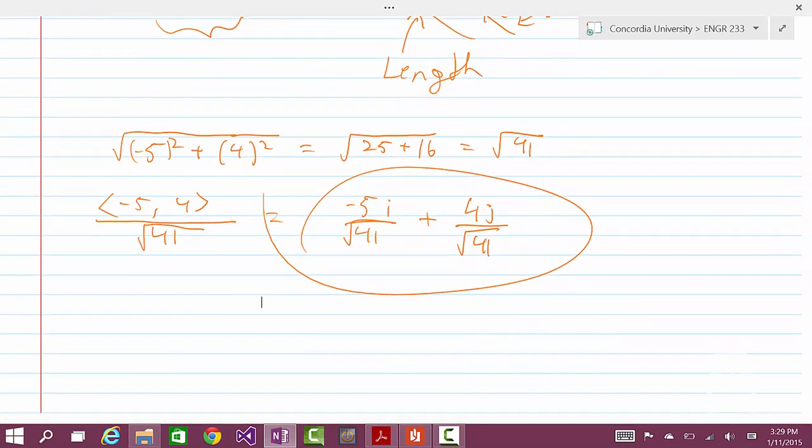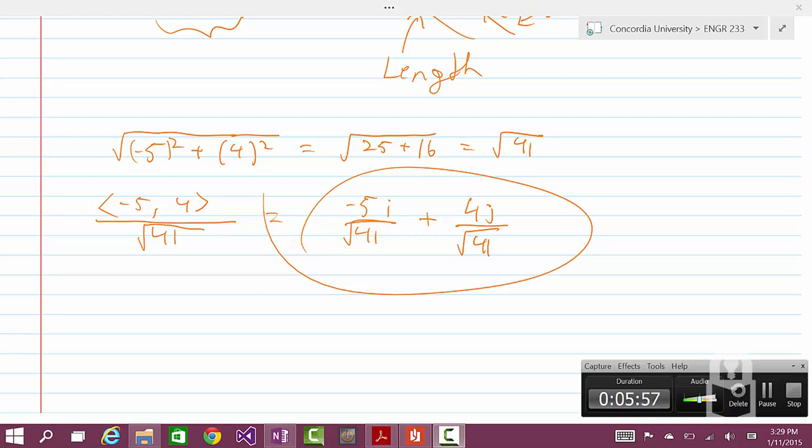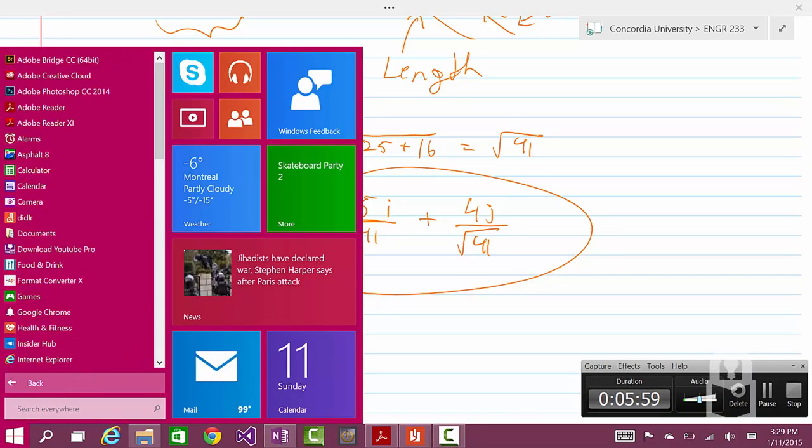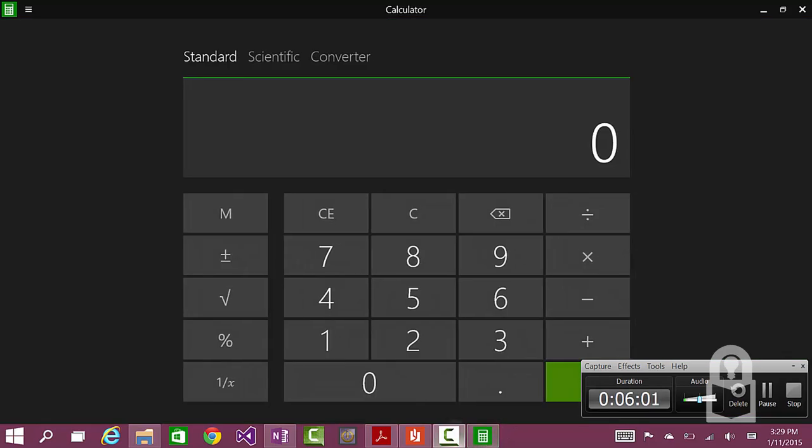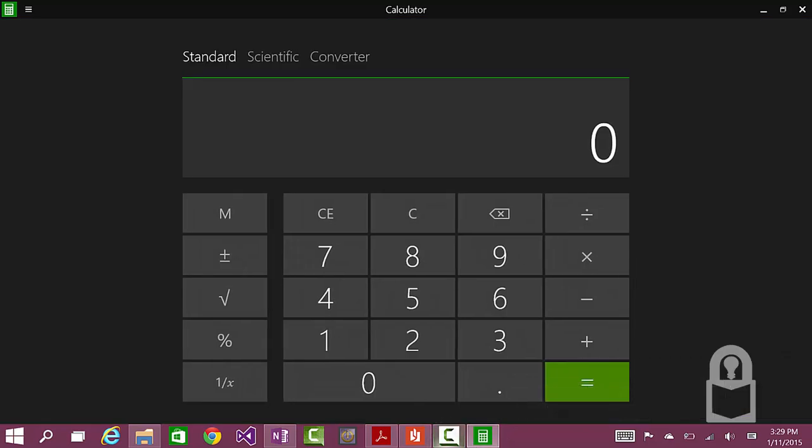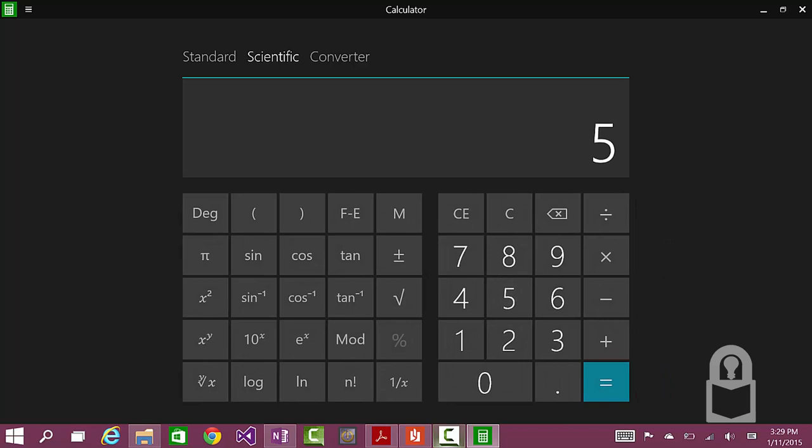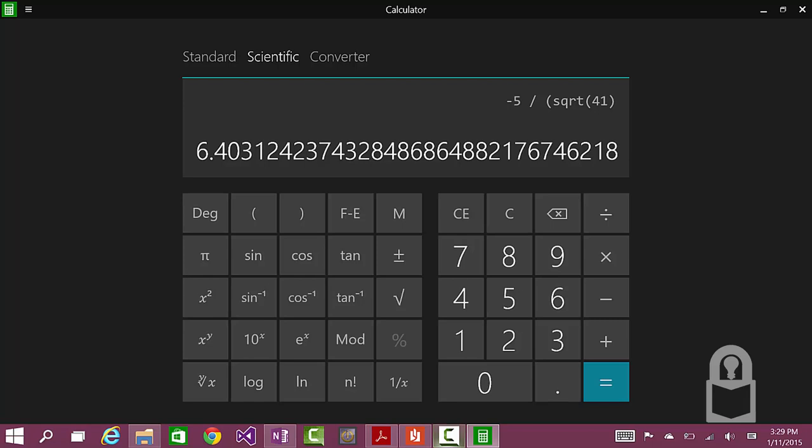Now we could get an approximate answer, so we could do something like this. Let's do this, let's do calculator. So it would be negative 5 divided by square root of 41. And this would be the x component, or the i component, negative 0.78.